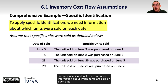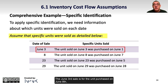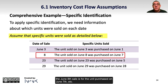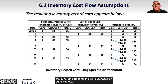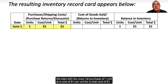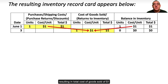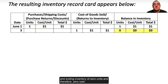To apply specific identification, we need information about which items are sold on each date. Assume the specific units were sold as detailed: the June 3rd sale is for the unit purchased on June 1st, the June 8th sale is for the unit purchased on June 7th, etc. Working through from the beginning: on June 1st, one unit is purchased at a cost of $1 per unit for a total cost of $1. On June 3rd, that unit is sold with the related cost of $1, resulting in total cost of goods sold of $1 and ending inventory of 0 units and $0 cost.